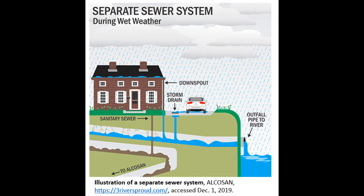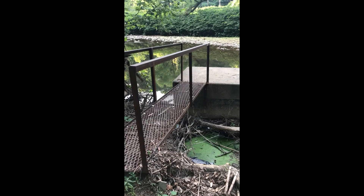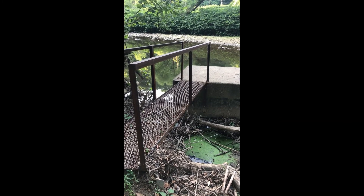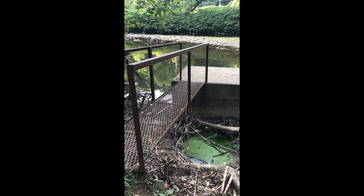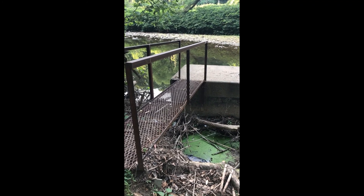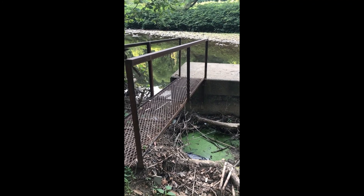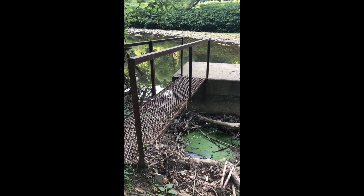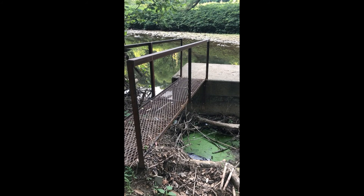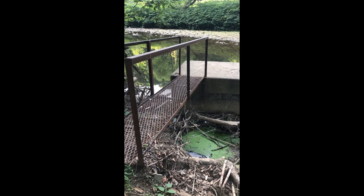Many cities choose separate sewer systems, where storm runoff and sewage are collected in different pipes, which means they avoid combined sewer overflows. During a combined sewer overflow event, sewage and storm runoff enter the stream from this discharge point. The sewage eventually flows into the river, which then flows further downstream.